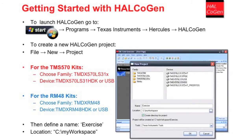Once the New Project window has opened, the device family and specific device must be selected. Then the name of the project can be entered along with the location for all the generated code to be stored. The final step in setting up a new project is to select the toolset that will be used during compilation and debug. The default is Texas Instruments tools; however, other compilers and toolsets like IAR and Keil ARM tools can be selected.